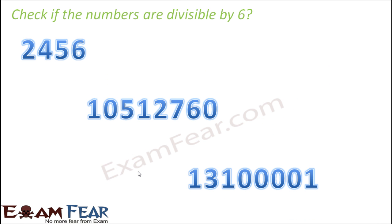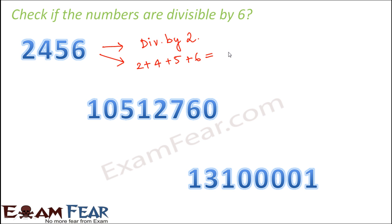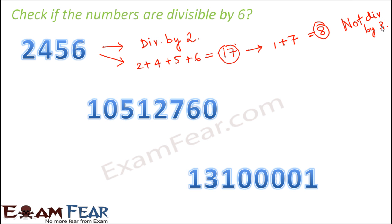Let us check if these numbers are divisible by 6. The first number is 2456. Checking divisibility by 2: the units digit is 6, so it is divisible by 2. Checking divisibility by 3: 2 + 4 + 5 + 6 = 17. If unsure whether 17 is divisible by 3, sum the digits again: 1 + 7 = 8, and 8 is not divisible by 3. Therefore 2456 is not divisible by 6.